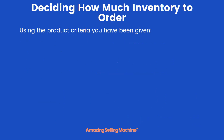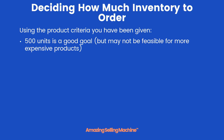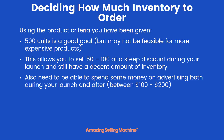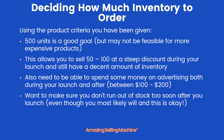Using the product criteria you've been given, here are some real numbers to use as a rule of thumb. 500 units is a good goal for starters, though it may not be possible if you have a more expensive product. This allows you to sell 50 to 100 units at a steep discount during your initial launch and still have a decent amount of inventory left over. You also need to budget for advertising — between $100 and $200 is a rough estimate — both during your launch and after.